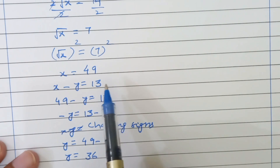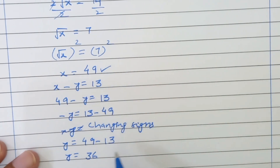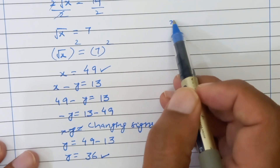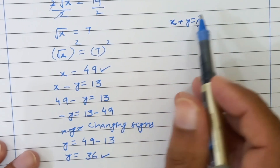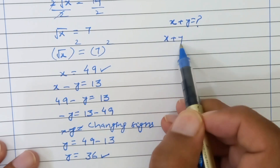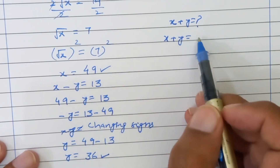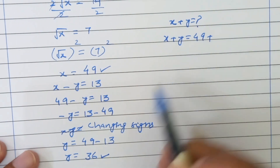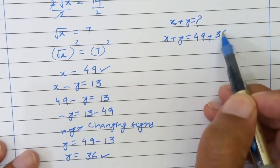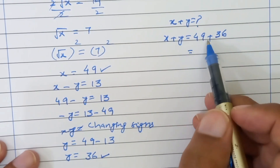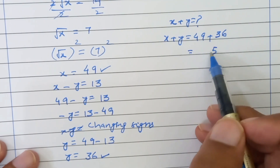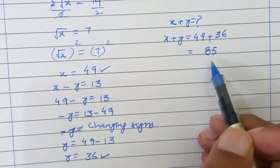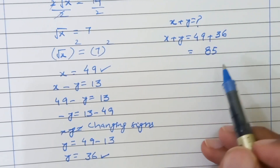Finally, we get x equal to 49 and y is equal to 36. So what we have to find? We have to find the value of x plus y. So x plus y becomes 49 plus 36. Adding these two numbers: 9 plus 6 is 15, carry 1; 4 plus 3 plus 1 is 8. So x plus y equals 85.